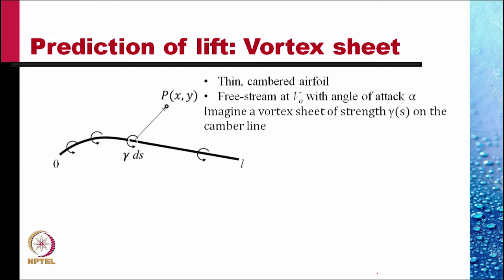To the first approximation of the flow, we can forget about the thickness and worry only about the camber line. We imagine a vortex sheet of strength gamma s on the camber line. Calculate the potential at point x y.